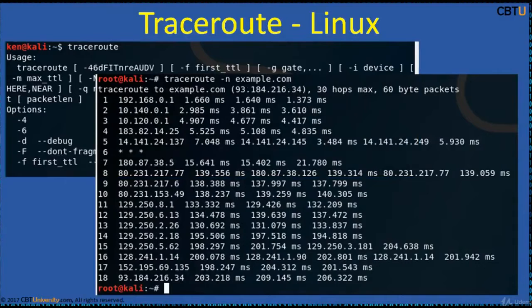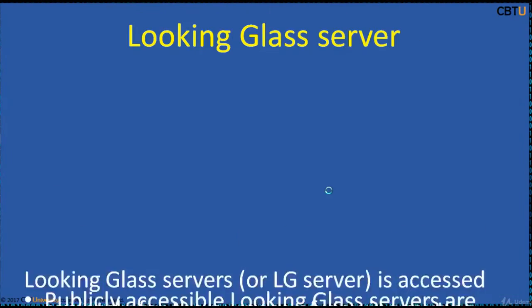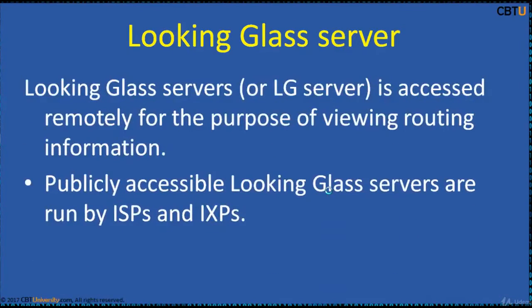In Linux, to avoid DNS resolution use the -n switch: type traceroute -n followed by the domain and hit enter.